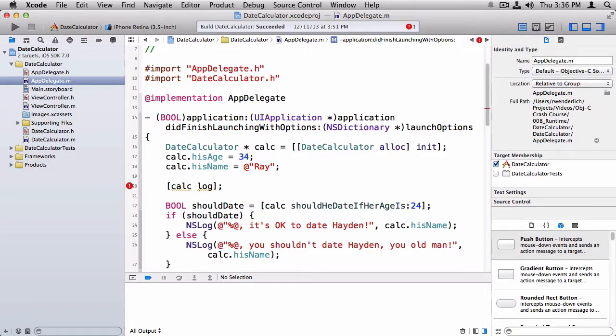Now of course, we could simply go inside date calculator and add that method, but for the sake of this tutorial, let's pretend that we don't have the source code for date calculator. Let's say that somebody else wrote this, and it's in another library, maybe Apple wrote it for example, and we want to be able to extend it to add this method without having to subclass it or anything like that. So how can we do that?